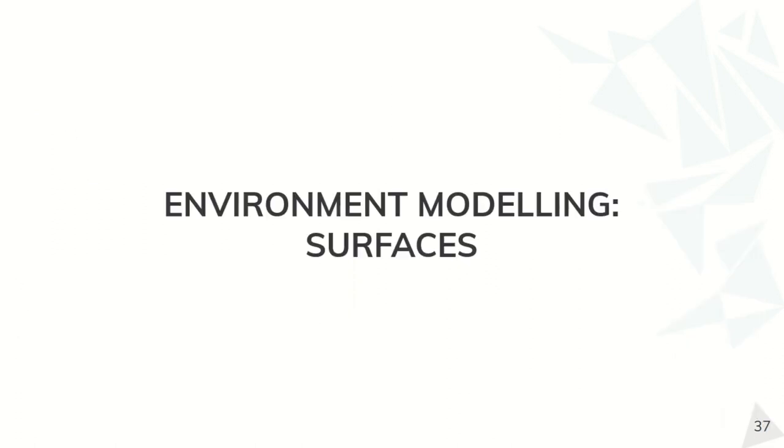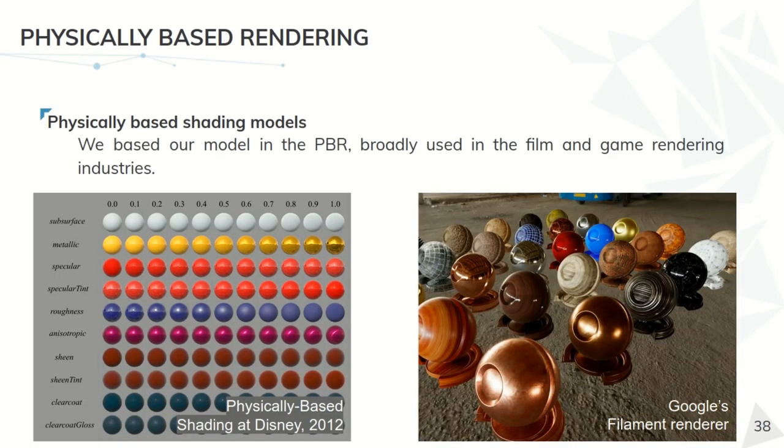Now let's see how we do the environmental modeling for surfaces. For this, we base in the physically-based shading models. They are broadly used in the film and game industries, but in our case, we have some differences. For starters, we want to take these models and extend them to the whole electromagnetic spectrum, and for that, we are going to keep it as simple as possible without losing physical important properties, and also, instead of using artistic variables, we are going to replace them with some more physically intuitive ones.